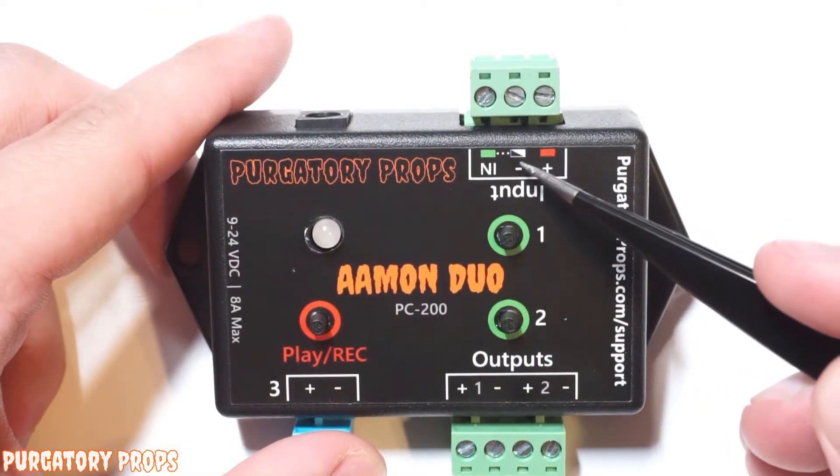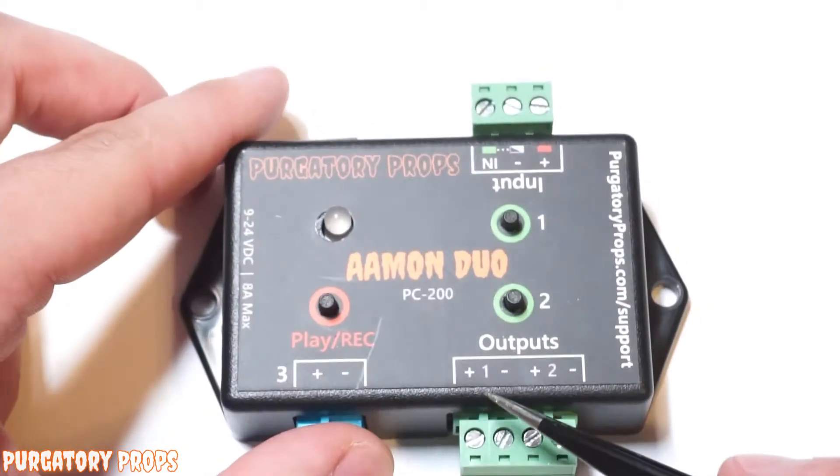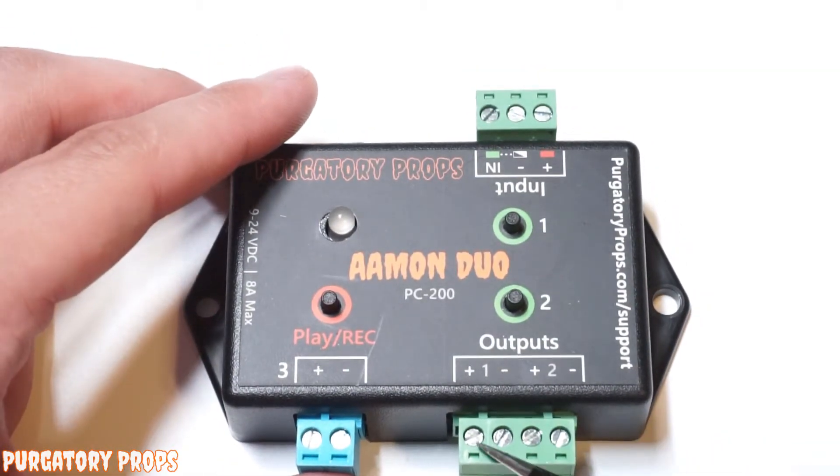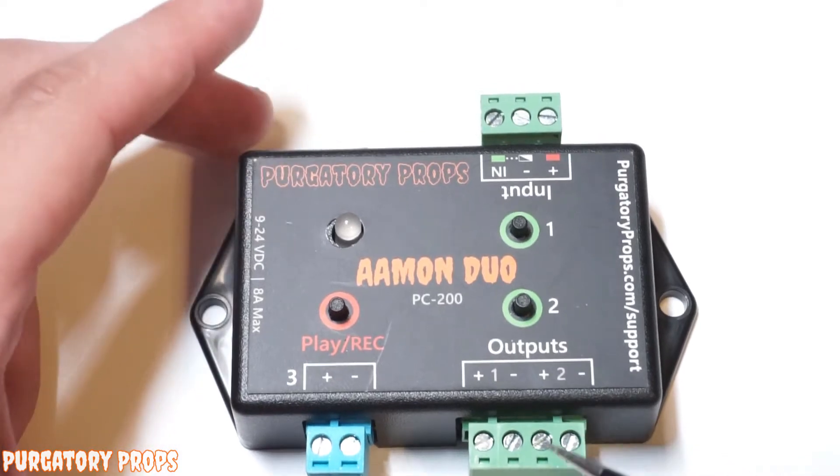To get the controller to trigger, you need to connect the negative to the IN. Down here, we have our output terminals. So you have positive and negative for output one, and positive and negative for output two.